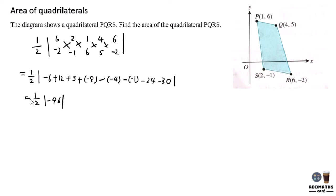By modulus, you have positive 46, and times 1 over 2 gives you 23 with units squared, as it is an area. This is how you find the area of a quadrilateral.